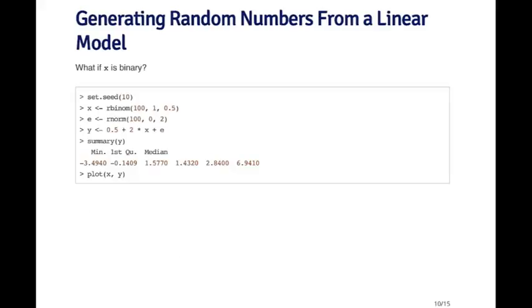So just a slight variation of the previous example. What if x is a binary random variable instead of x being a normal random variable? So remember, maybe it represents a gender or maybe some treatment versus control or something like that. So here it's very simple. I can generate binary data using the binomial distribution and the rbinom function. So I set the seed again. And I generate 100 binomial random variables. This comes from the binomial distribution, which is n equal to 1 and p equal to half. So the probability of 1 is going to be equal to 0.5. So I generate 100 of those.